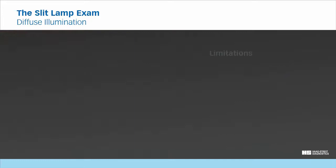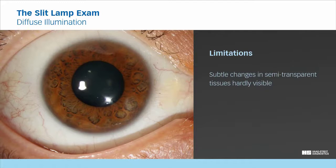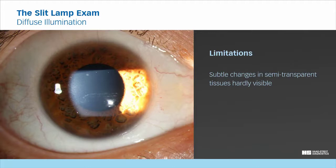Limitations. While diffuse illumination is useful for providing an overview, it is unsuitable for detecting subtle changes in semi-transparent tissues. In this image, for example, you do not see any defect in the corneal epithelium. But when illuminating with focal illumination, it becomes immediately visible.